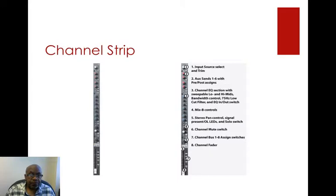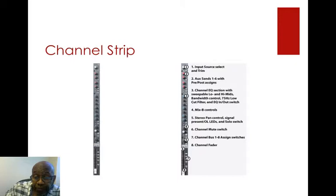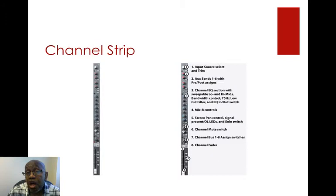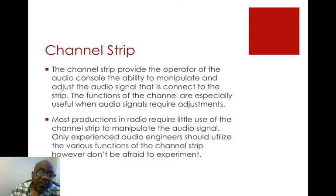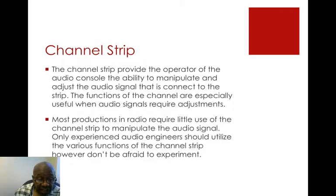You'll have special items or special areas on the channel strip that you need to understand. At the very top, as you can see on number one, that's the input source select and trim. Number two is the auxiliary sends area. If you continue to go down and read, you can find out the different parts of a channel strip. The channel strip provides the operator of the audio console the ability to manipulate and adjust the audio signal connected to the strip. The functions of the channel are especially useful when audio signals require adjustments.